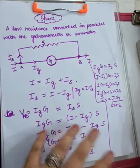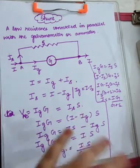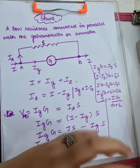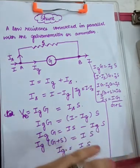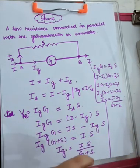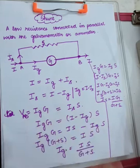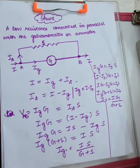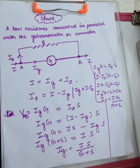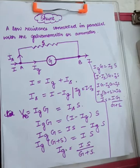Dear students, in this video we are going to learn about shunt, and then we will learn about the conversion of a galvanometer into an ammeter and then into a voltmeter. A shunt is a low resistance which is connected in parallel with the galvanometer or ammeter so that the strong currents do not destroy the galvanometer or the ammeter.